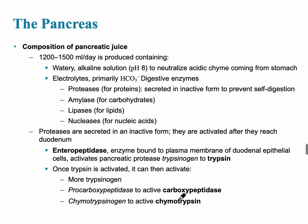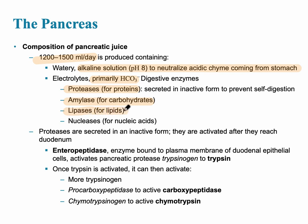The pancreatic juice produced amounts to almost 1,500 milliliters per day. It's important to remember that this juice is alkaline because it neutralizes the acidic chyme coming from the stomach, which maintains a very low pH. In addition to electrolytes and bicarbonate, pancreatic juice contains digestive enzymes: proteases for proteins, amylases for carbohydrates, lipases for lipids, and nucleases for nucleic acids. These enzymes are then activated in the small intestine.